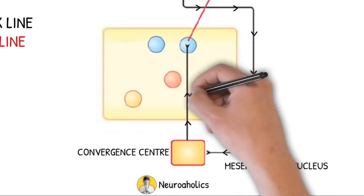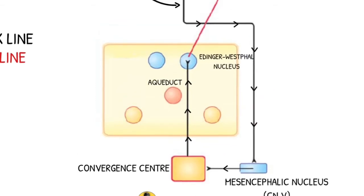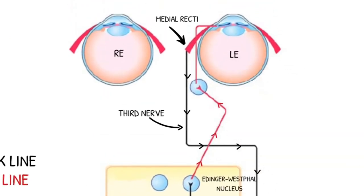Internuncial fibers from the convergence center then go to the Ettinger-Westphal nucleus. Till here is the afferent pathway. The efferent pathway is along the third nerve, similar to that of the light reflex.